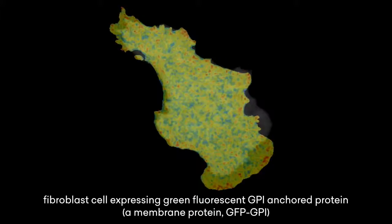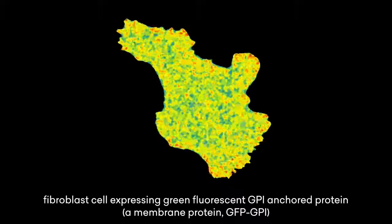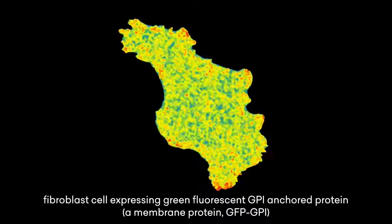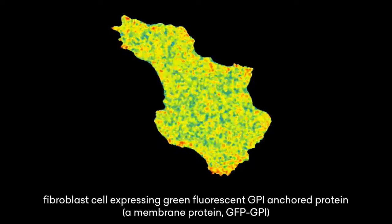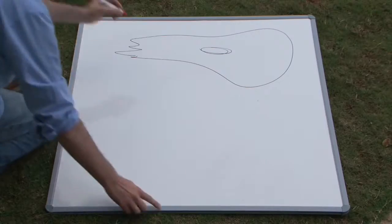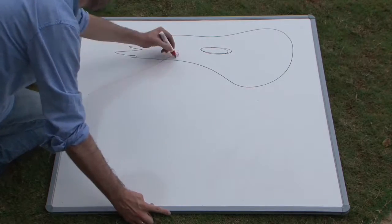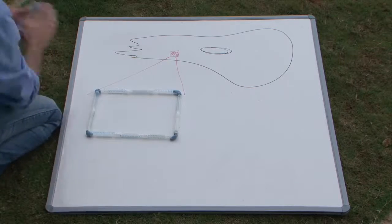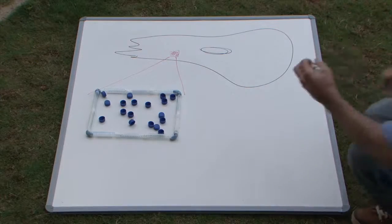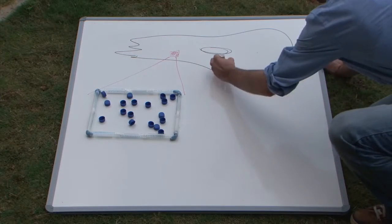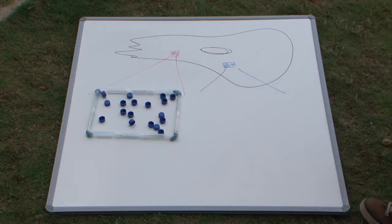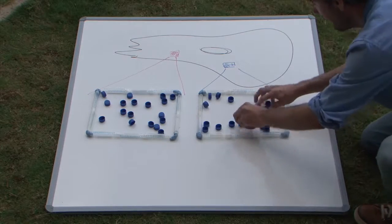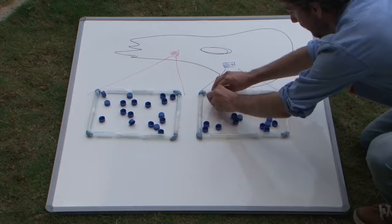A close look using specialized microscopy techniques that employ FRET-based fluorescence and anisotropy measurements reveals a heterogeneous FRET map. There are red zones that have less FRET signal — these are rich in monomers. They are separated by more blue zones that have a higher FRET signal.